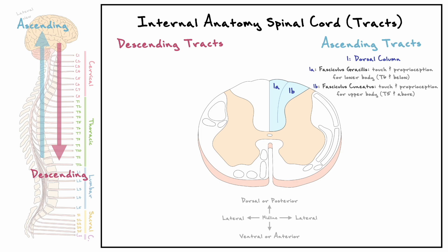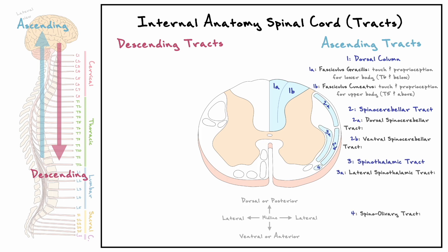In the lateral column, there are four ascending tracts: the dorsal and ventral spinocerebellar tracts, the lateral spinothalamic tract, and the spinal olivary tract. Tract names follow the rule that the first part indicates the starting point and the last part the endpoint — so spinocerebellar goes from the spinal cord to the cerebellum, and spinothalamic from spinal cord to thalamus. The dorsal spinocerebellar tract conveys proprioception for segments C8–L2; the ventral for L3 to the coccyx. The lateral spinothalamic tract carries mainly pain and temperature to the thalamus. The spinal olivary tract carries proprioceptive information to the inferior olive.